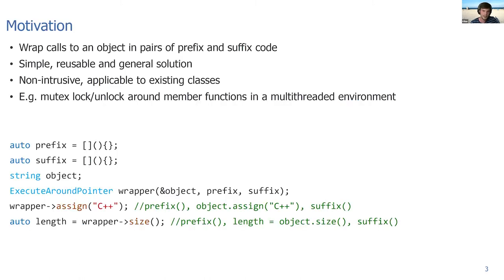Today I'm going to talk about how we can actually achieve something similar as a library feature. The motivation is to wrap the calls to an object in pairs of prefix and suffix code. It should be simple, reusable, and a general solution. It will be non-intrusive, so you can put it on top of every other object without having to change it. An example is how you can automatically lock and unlock a mutex around each member function call for thread-safe access in a multi-threaded environment.